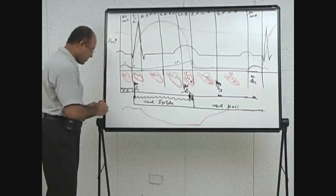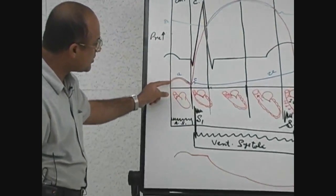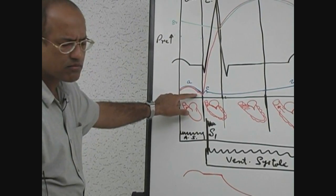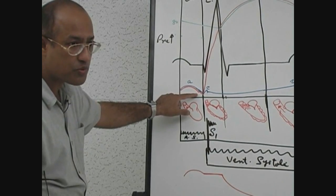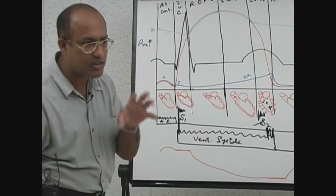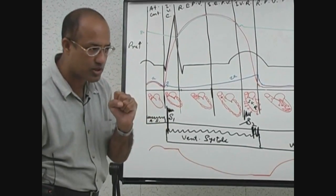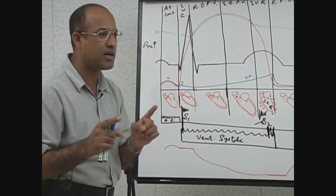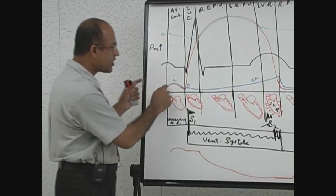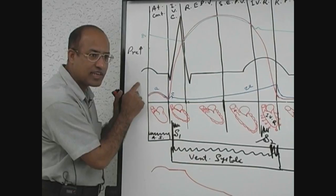To clarify electrical activity: atrial depolarization should occur before atrial contraction, because electrical events occur first and then mechanical events follow. First the atria are electrically stimulated, then they mechanically contract. Similarly, the ventricle is first electrically stimulated, then undergoes mechanical contraction. In the heart, always remember: electrical event first, then mechanical event.